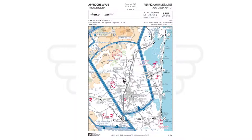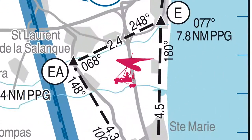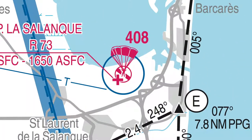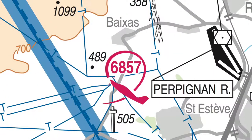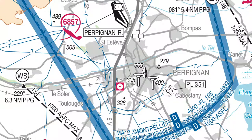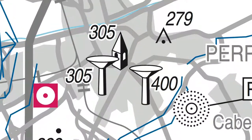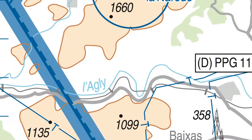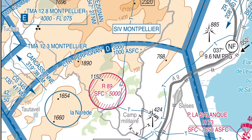This chart will also show us any hazardous activities in the area, such as ULM, parachuting, or even aerobatics. Here we've got all three of those activities, so we have to keep an eye out. It will also show any hazardous obstacles, such as towers, buildings, or topographical obstacles. As you can see in the northern area, we've got quite big hills, so we've got to keep an eye out for those.